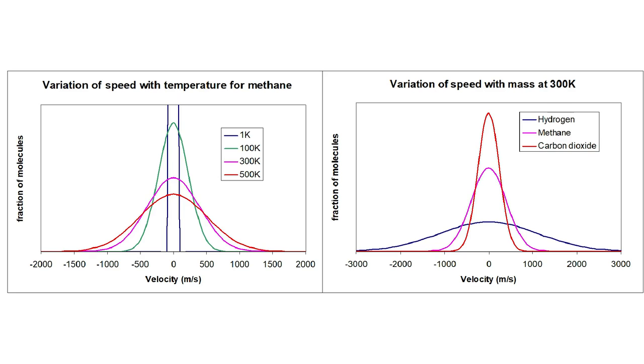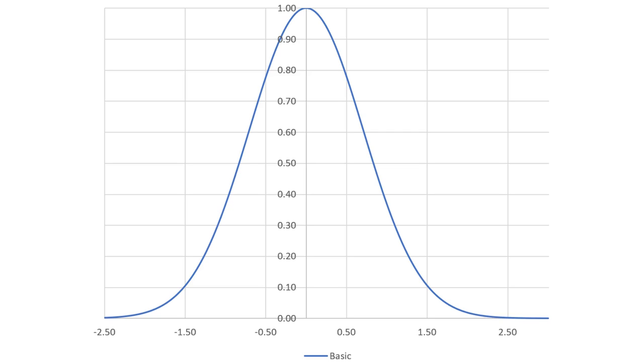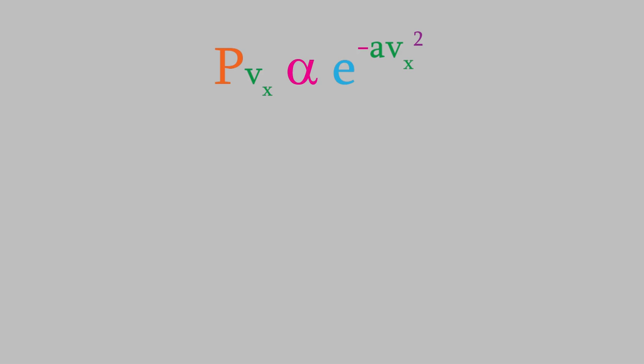However, these plots make it look like zero is the most likely velocity for a molecule. To solve this difficulty, Maxwell was able to use some simple but clever mathematics. Here's how. Let's think about what the y-axis of these plots means. This axis represents a relative probability that a molecule will have a velocity described on the x-axis. We can write that as an equation this way.